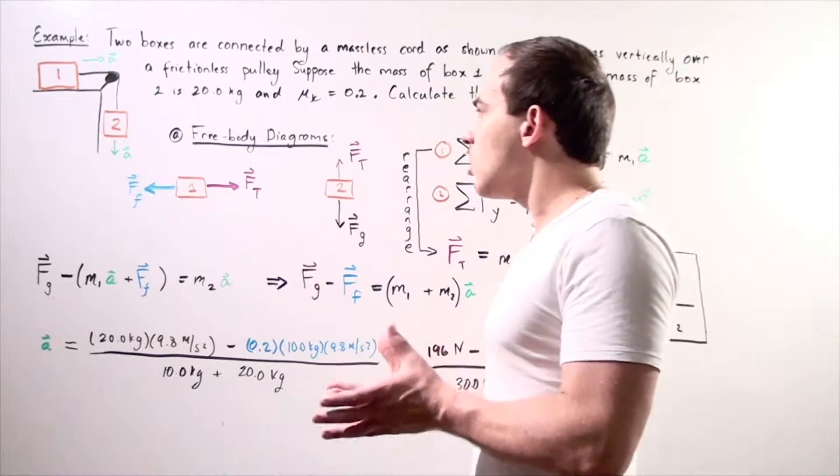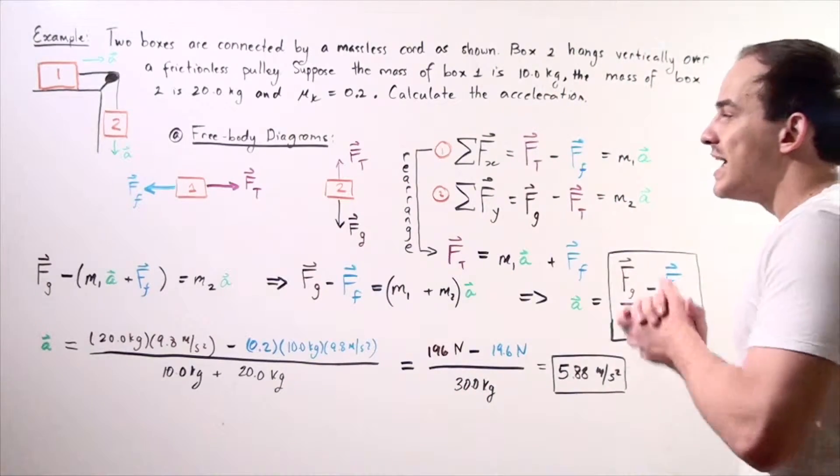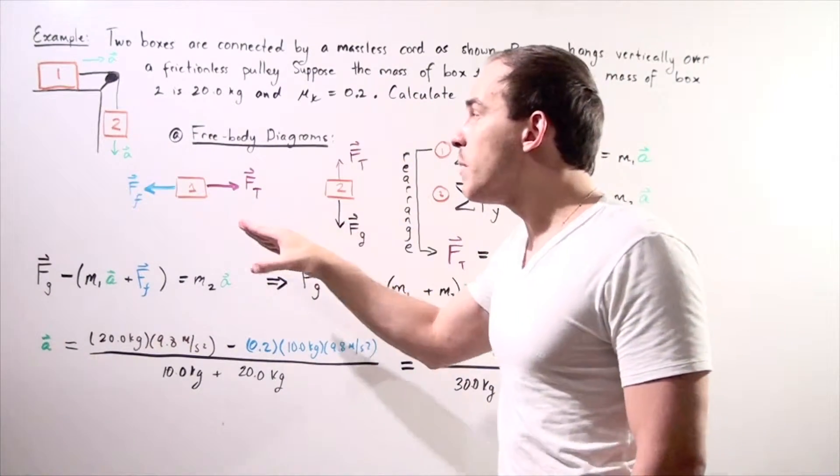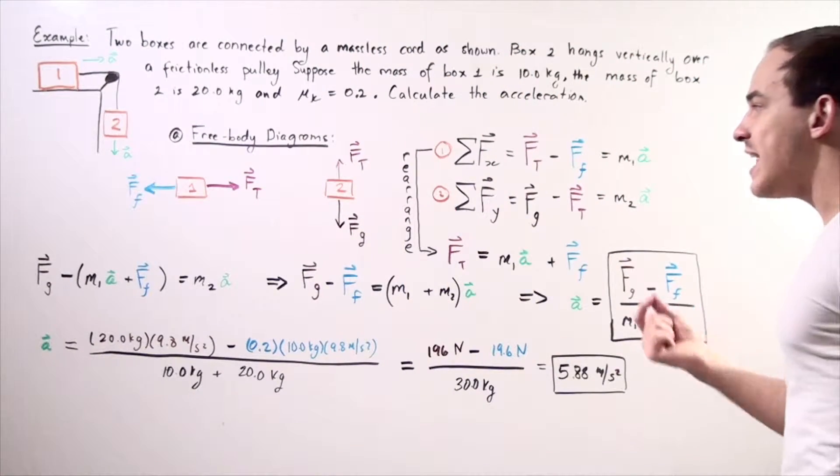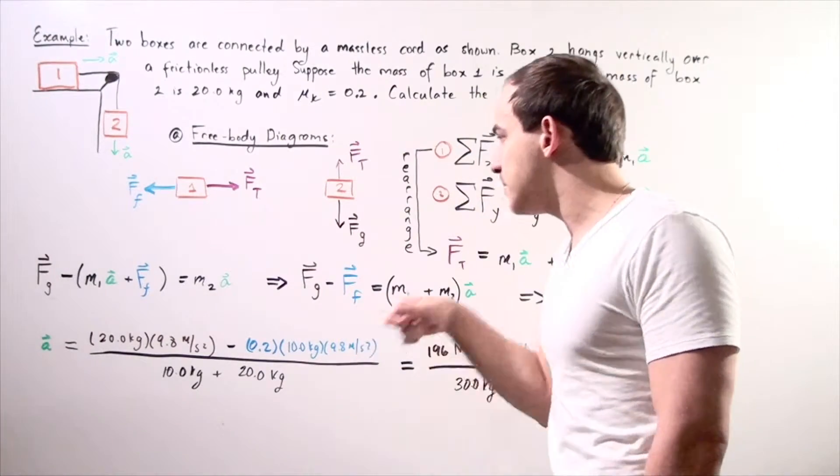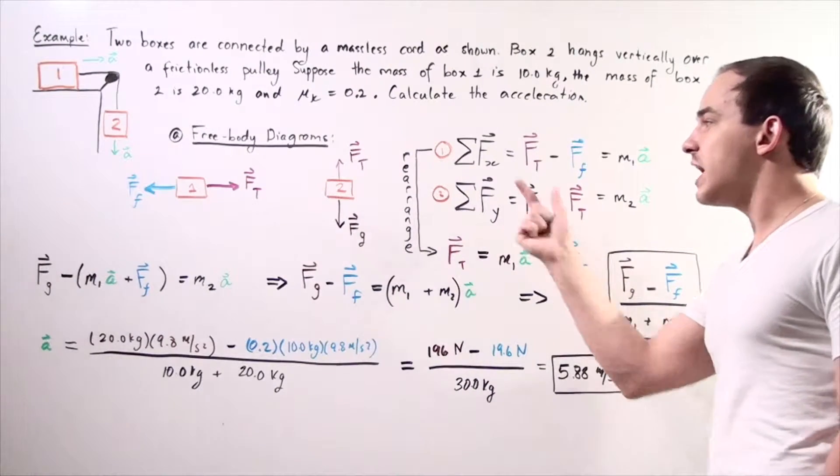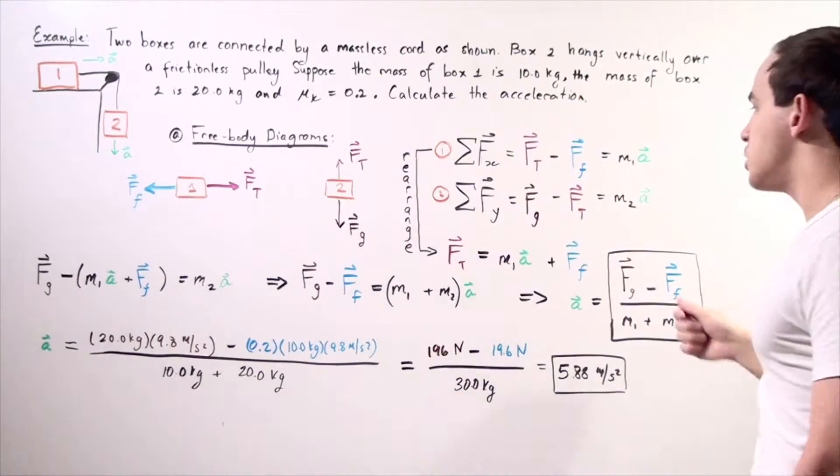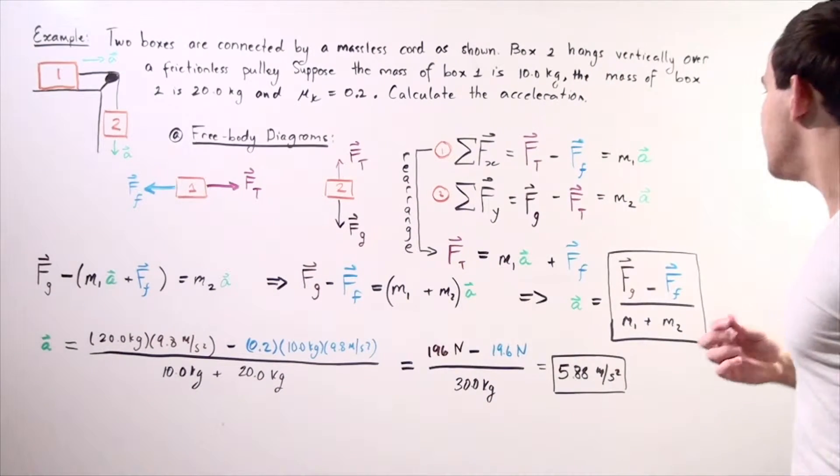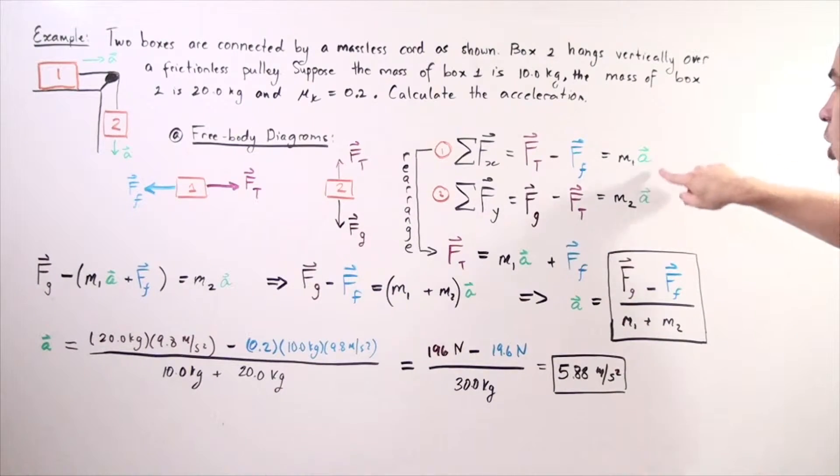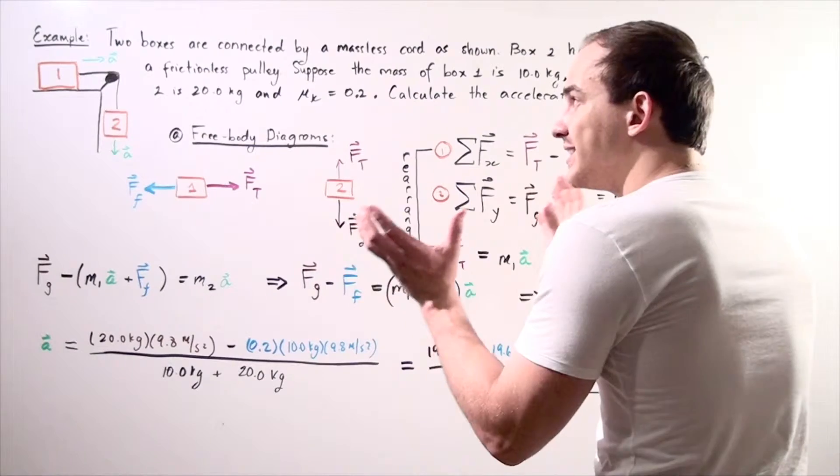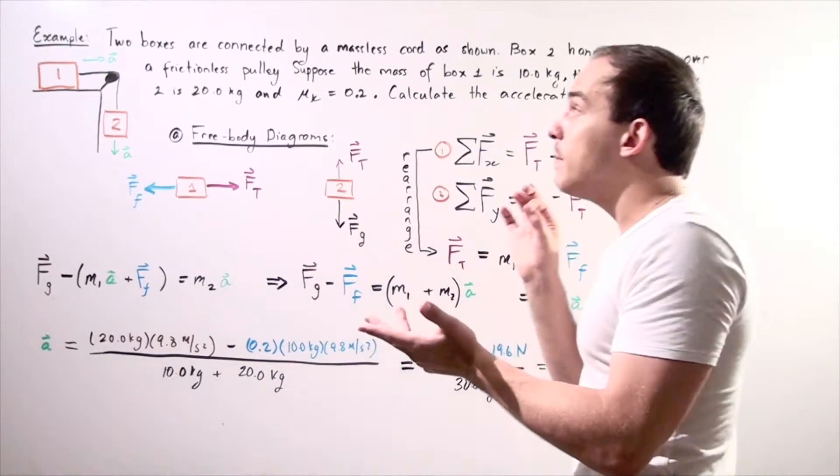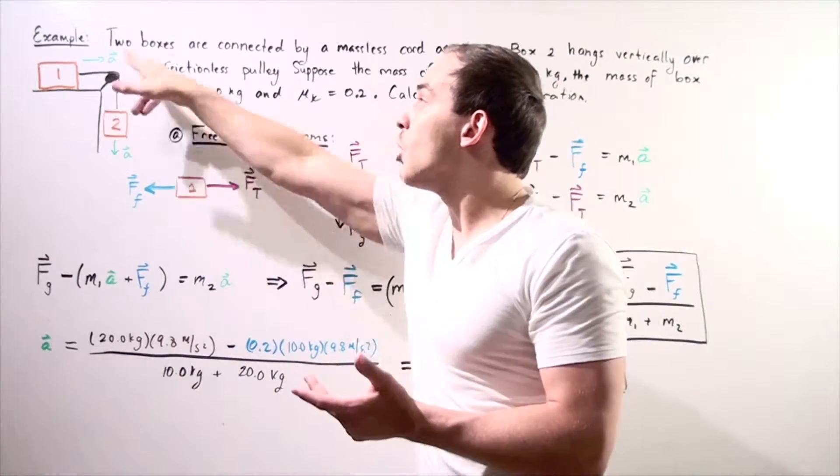At the same time, we could also draw the free body diagram for object two, for mass two. We have the force of gravity pulling down on box two and the tension in our rope is pulling it back upward. We take the sum of all the forces along the y axis. We choose going down to be positive, going up to be negative. The force of gravity on box two minus the tension in my rope, the same tension that we spoke about in the first equation equals the mass of object two multiplied by that same acceleration. These A's are the same because our two objects, two boxes are connected by a cord and these tensions are also the same because we made the assumption that our pulley is frictionless and our rope is massless.